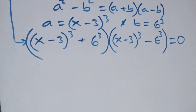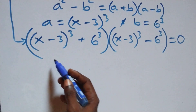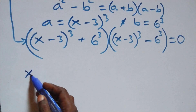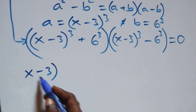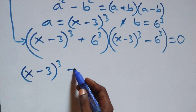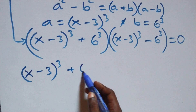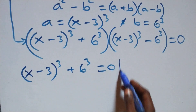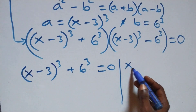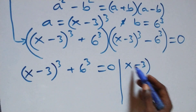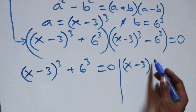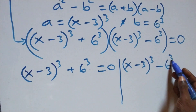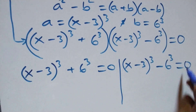We have two possible cases. The first one: (x minus 3) raised to power 3 plus 6 raised to power 3 equals 0. Or we have (x minus 3) raised to power 3 minus 6 raised to power 3 equals 0.